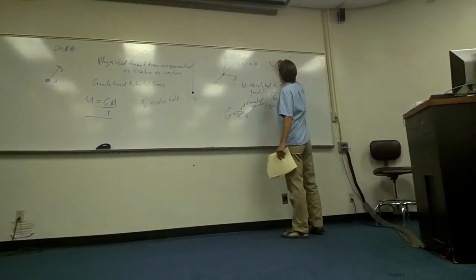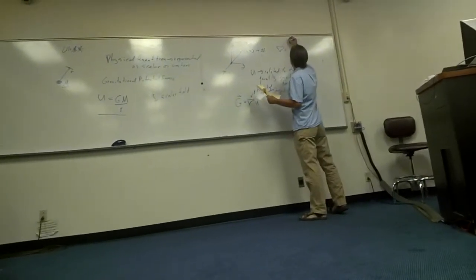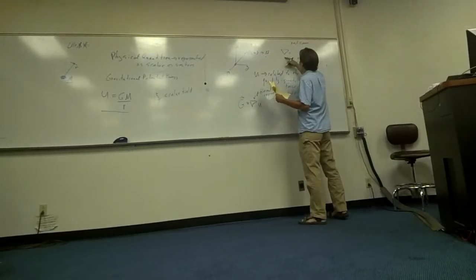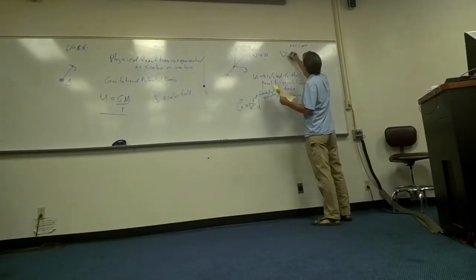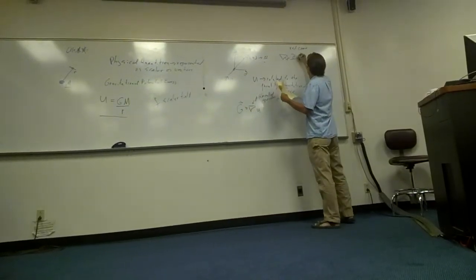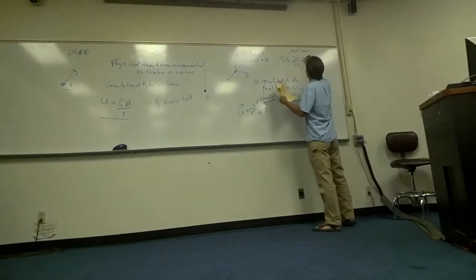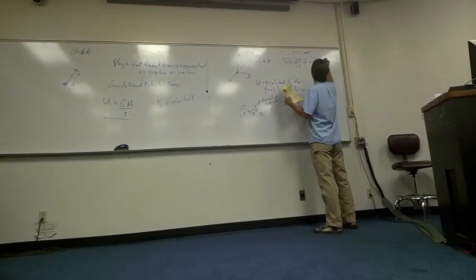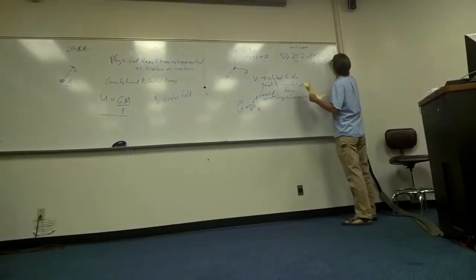Del, if you want to write it down, don't worry about it. In rectangular coordinates, or Cartesian coordinates, del, there's a partial derivative relationship. This is del U. It would be the partial of U with respect to X, X-hat, plus partial of U with respect to Y, Y-hat, plus partial of U with respect to Z.